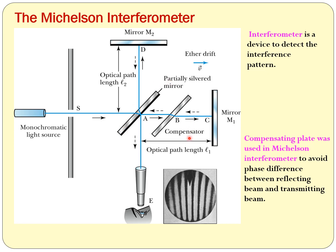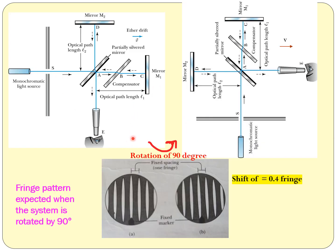This was the interferometer used for the measurement. When the whole setup was rotated by 90 degrees, they observed an interference pattern in the first configuration where mirror M1 is horizontal and mirror M2 is vertical, with Earth's motion in one direction. After rotating by 90 degrees, the horizontal mirror M1 becomes vertical and M2 becomes horizontal. They were expecting a total time difference corresponding to a phase shift of 0.4 fringes after the rotation.